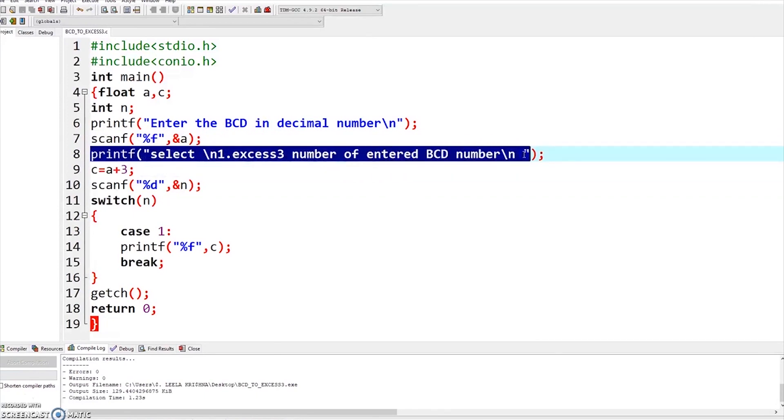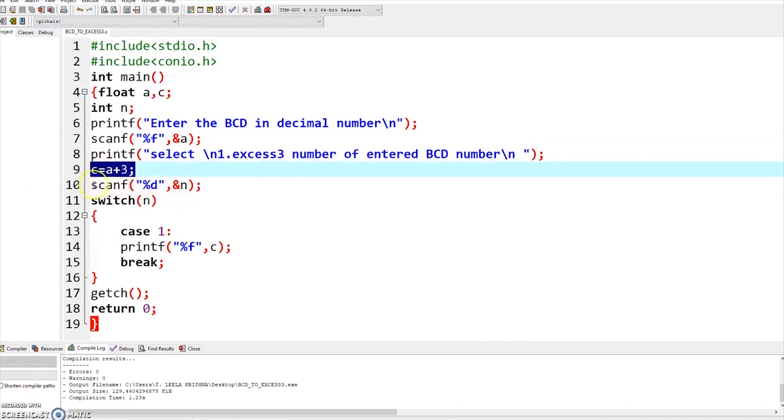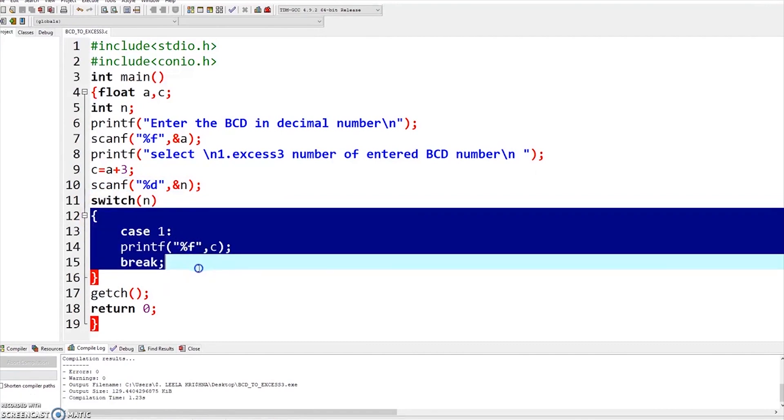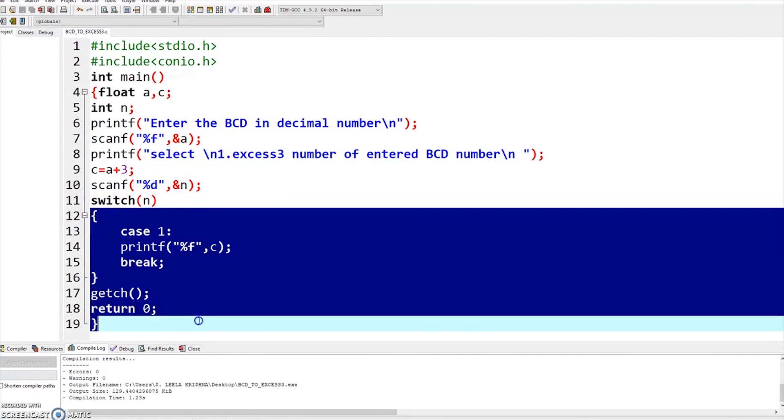It asks to select the BCD to Excess-3 Code Converter option. Here c equals a plus 3, which means the number entered by the user gets 3 added to it. There is a scanf statement to store the option selected by the user, and this is a switch case statement.